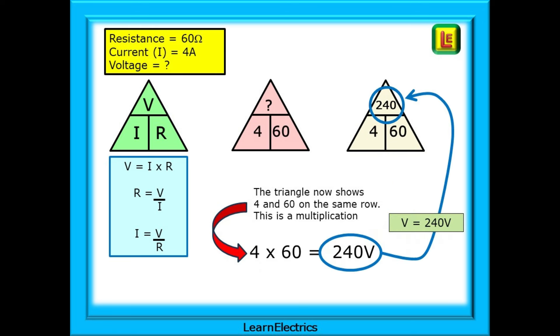Let's try another. This time, we are given the resistance as 60 ohms and the current as 4 amps. Now we must calculate the voltage of the circuit. Draw your empty triangle and fill in what we know, 60 ohms and 4 amps. Look at the pink triangle. 4 and 60 are both on the bottom row. This cannot be a division, so it must be a multiplication. 4 multiplied by 60 is 240, so the circuit voltage is 240 volts.